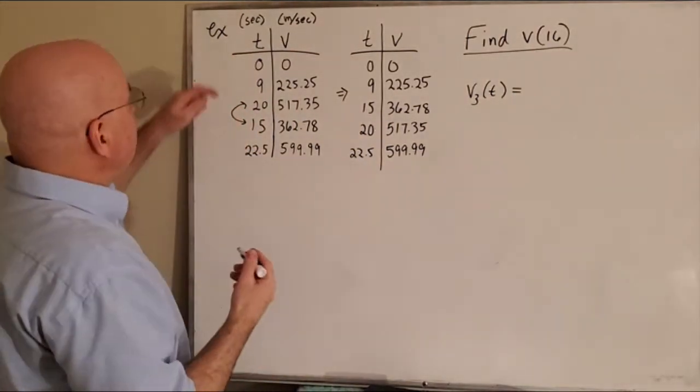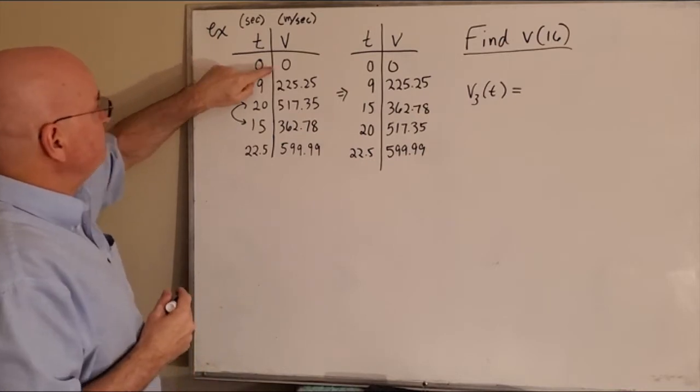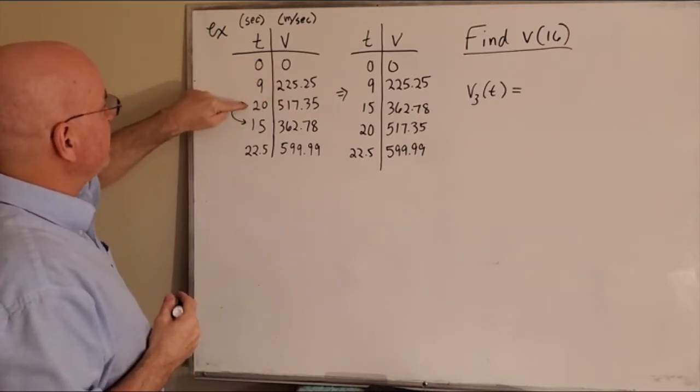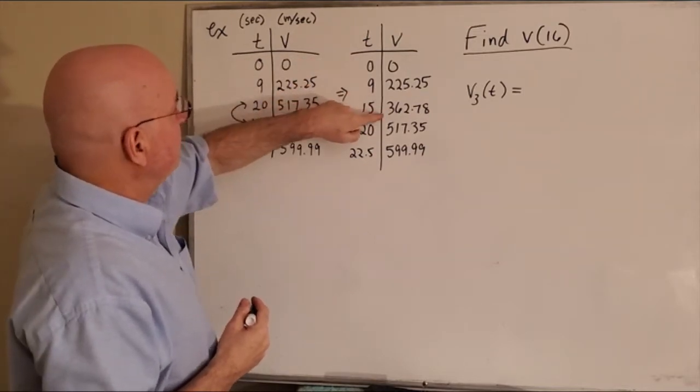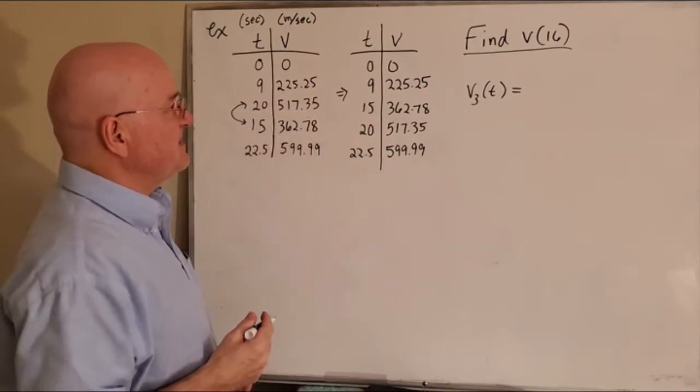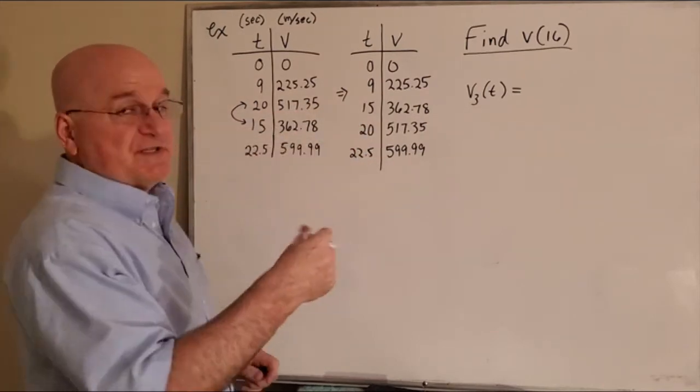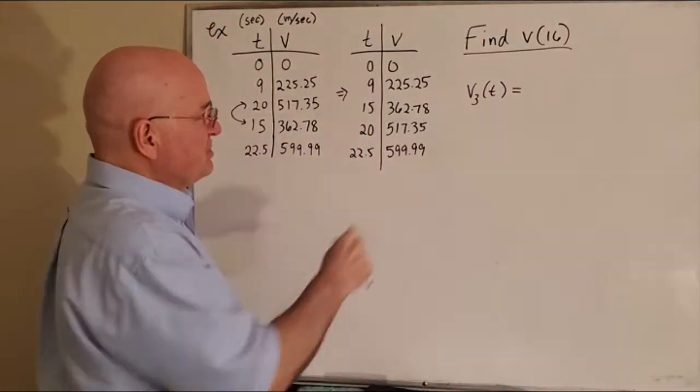The units of time are seconds. At time zero, the velocity was zero. At time nine, it was this speed. At time fifteen, it was this speed in meters per second. At time twenty, it was this speed, and at 22.5 was this speed. So the first thing you're going to do in your algorithm is loop through and figure out which two data points to use, which two data points around 16.